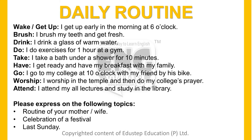In all these sentences you can find one important thing — there is no helping verb. After the subject you get the verb directly. This makes it very easy to become fluent. Keep three words in mind: subject, verb, and object.